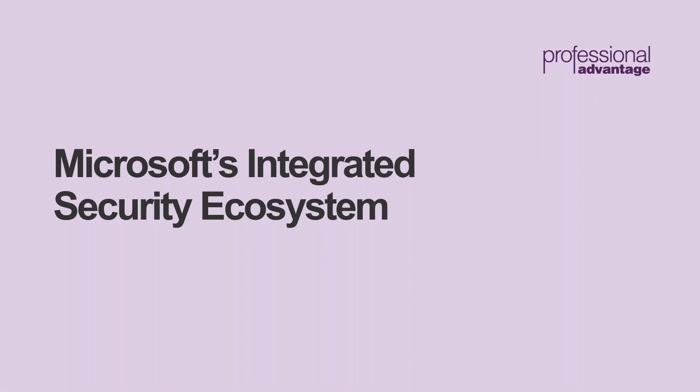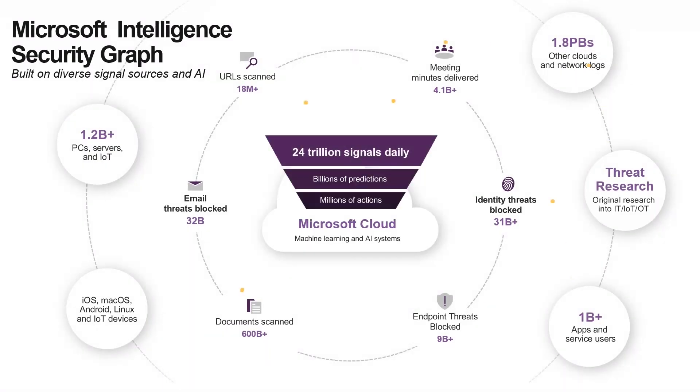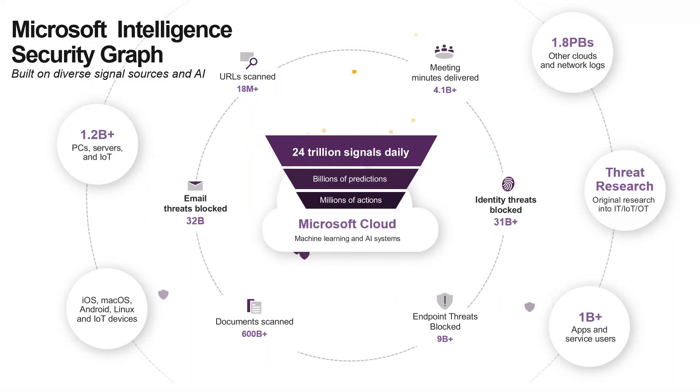We've discussed consolidating security items into a single vendor and how Microsoft ties into the Essential 8. Hopefully this has you thinking about how you can reach your goals a little easier. Now let's look at Microsoft and how it's become a massive security giant in recent years. The Microsoft Intelligence Security Graph is made up of 1.2 billion devices with 1 billion users, which produce a whopping 24 trillion signals a day.